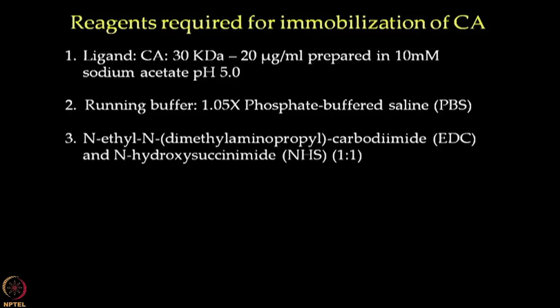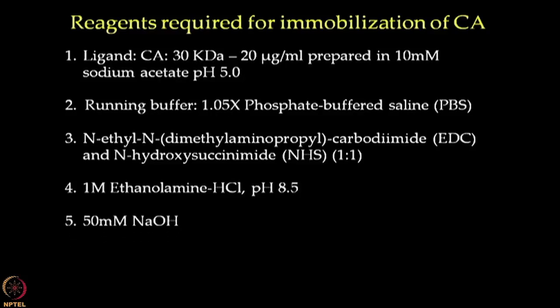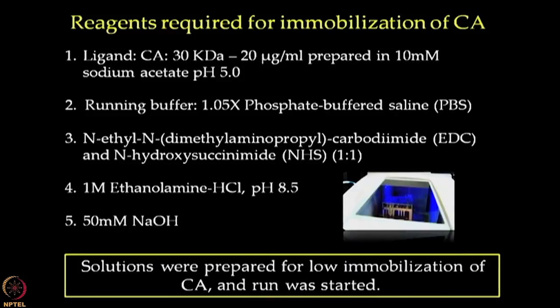EDC and NHS are prepared as suggested in the amine coupling kit for surface activation. 1 molar ethanolamine HCl pH 8.5 is prepared for blocking the free ester groups on the surface. Lastly, 50 millimolar NaOH was prepared which will be used to remove the electrostatically bound ligand. After preparation of these samples and reagents, we transfer the sample tubes to the appropriate rack and start the run as shown for beta 2 microglobulin immobilization in earlier lectures. We will hence look at the immobilization results obtained from this run.